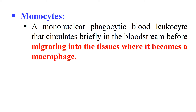Next, Monocytes. These are also phagocytic blood leukocytes — white blood cells — that generally circulate in the blood. But sometimes they come out of the blood and migrate to tissue where they are stored. When they migrate to tissue, they are then known as macrophages. So monocytes stored in tissue are known as macrophages.